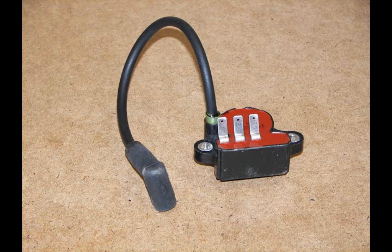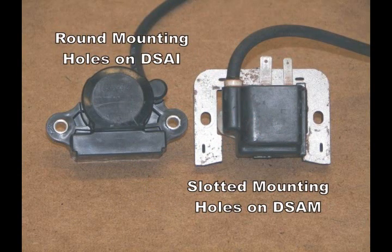Because the unit uses flywheel magnets to only trigger the module, a high energy, longer duration spark is produced at cranking speed as low as 100 RPM. The triggering characteristics of the DSAI do not require exact positioning relative to the flywheel, eliminating air gap adjustments with simple mount and go installation.